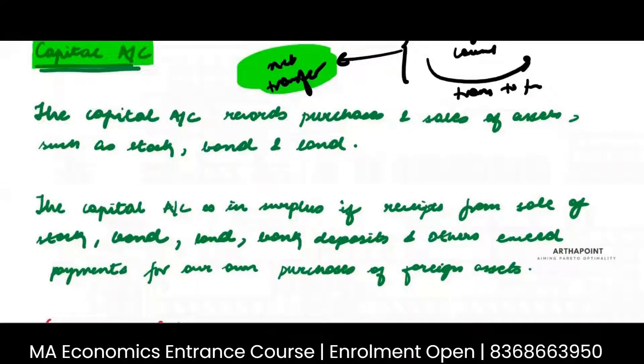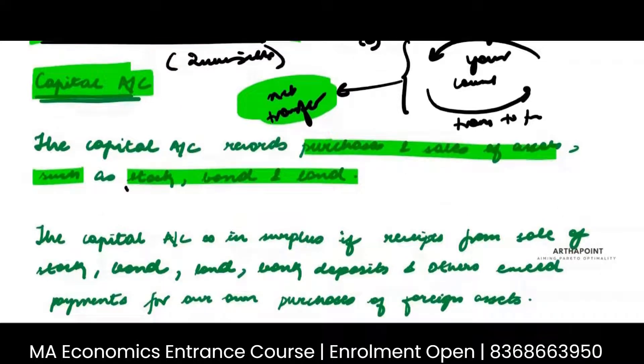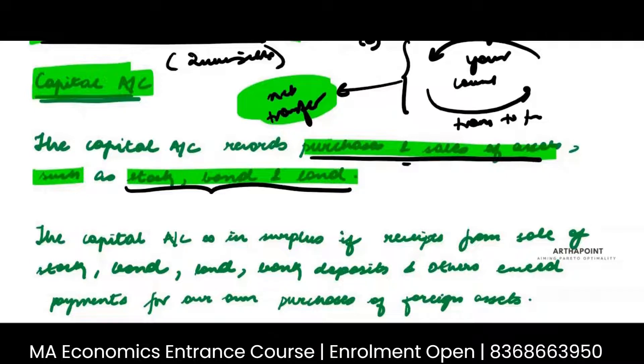The capital account records purchases and sales of assets such as stock, bond, land, etc. One is goods and services. The other is completely dealing with the sale and purchase of assets. Like when you buy a stock, when you buy a bond, when you buy land.